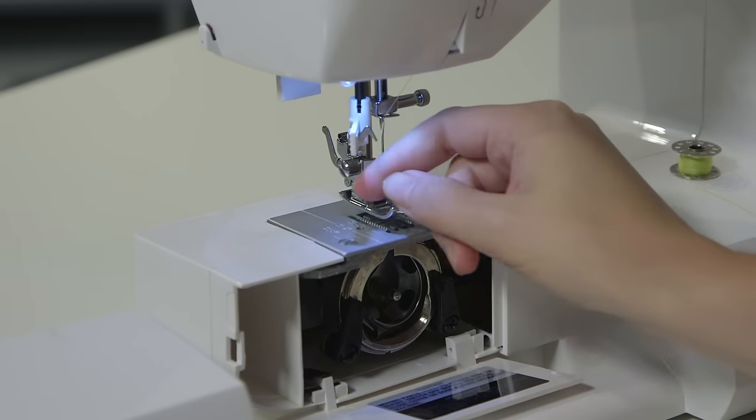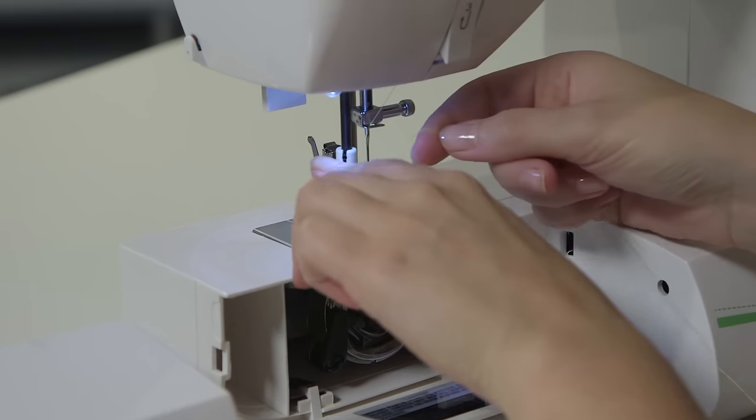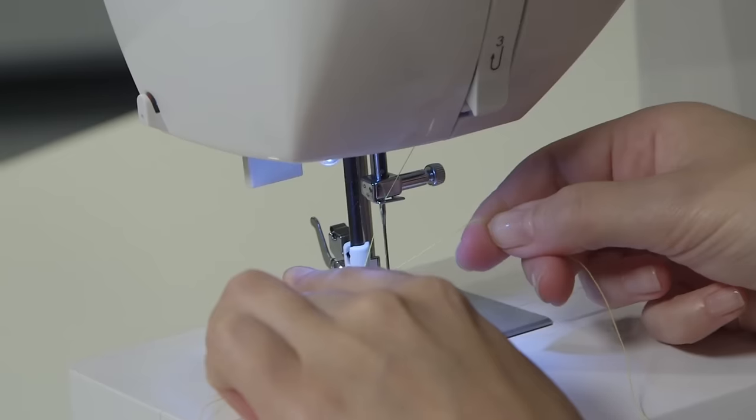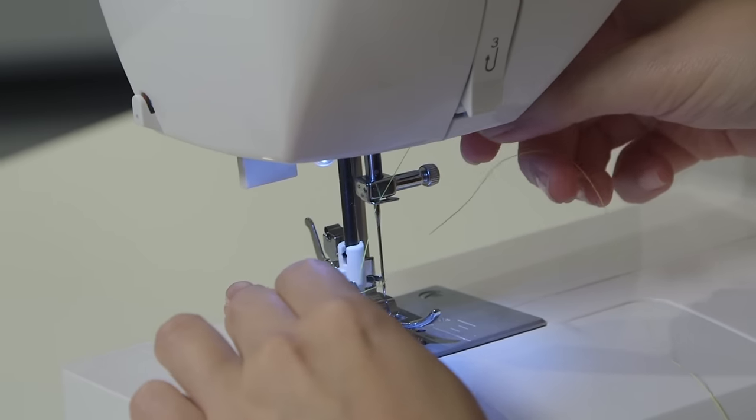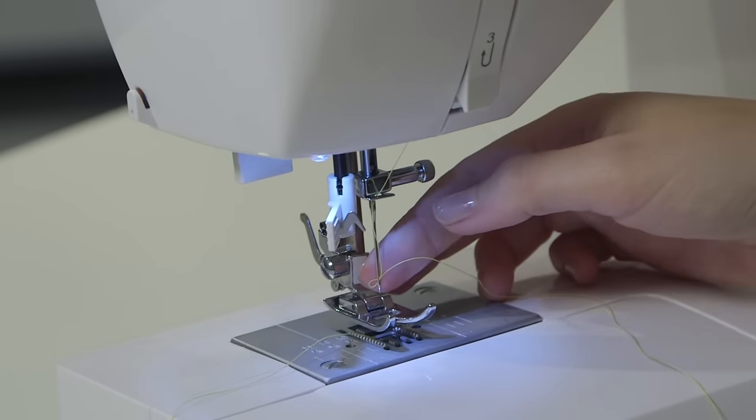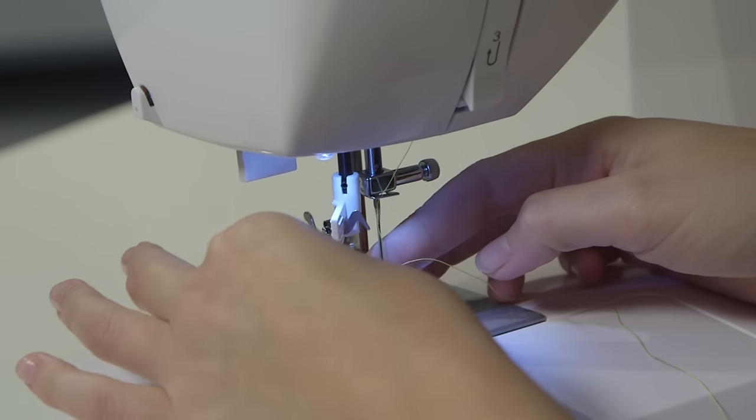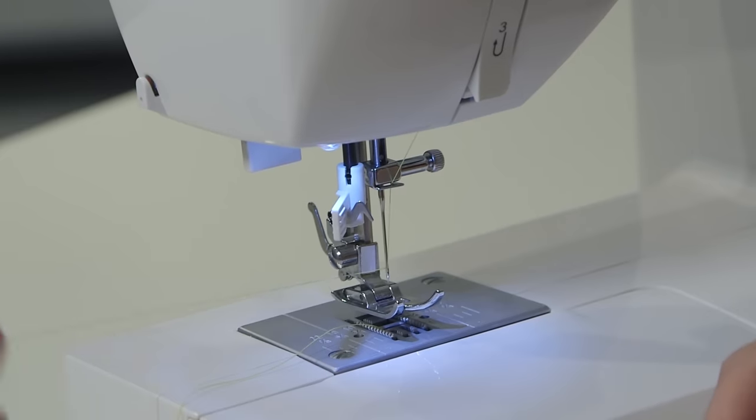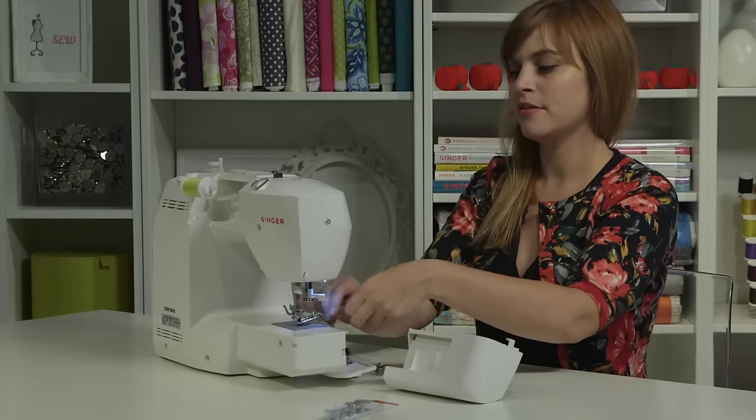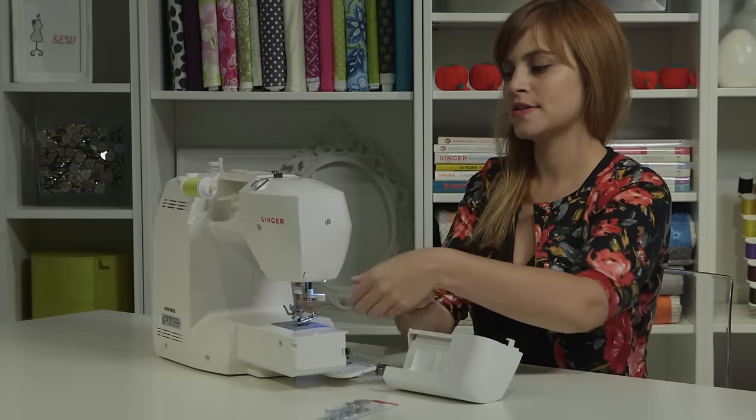We're going to catch the thread around this hook right there, and then we're going to push down and forward on the white portion of the needle threader and bring the thread under the prongs on the right, and then we'll let go. That's going to pull the thread in a little loop right through the eye of the needle, so we can grab that loop and pull the thread the rest of the way through, just like that.